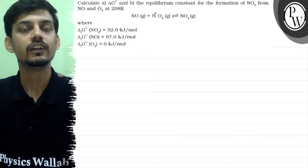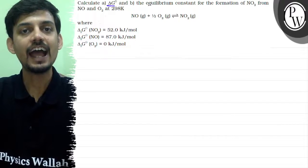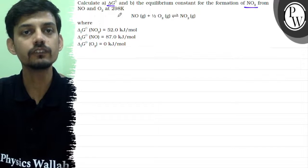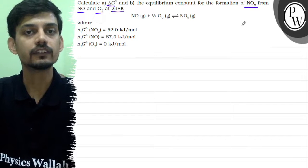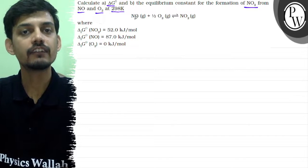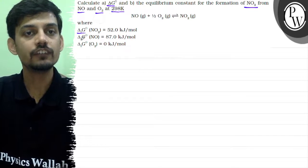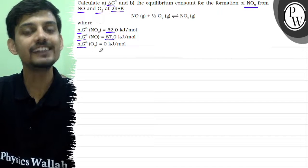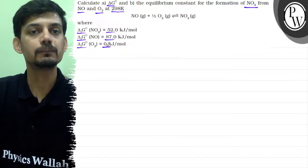The question says: calculate ΔG° and the equilibrium constant for the formation of NO₂ from NO and O₂ at 298 Kelvin. We are given NO + ½O₂ → NO₂, where the ΔG° values are given for NO₂, NO, and O₂ as 52, 87, and 0 kilojoule per mole respectively.